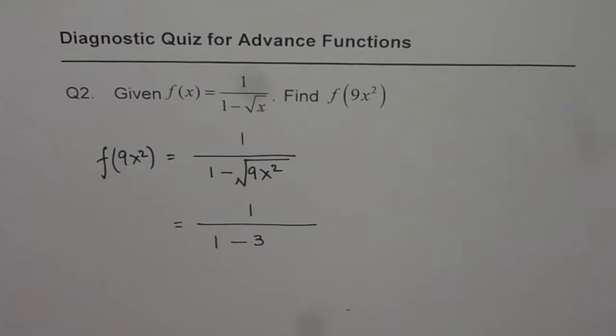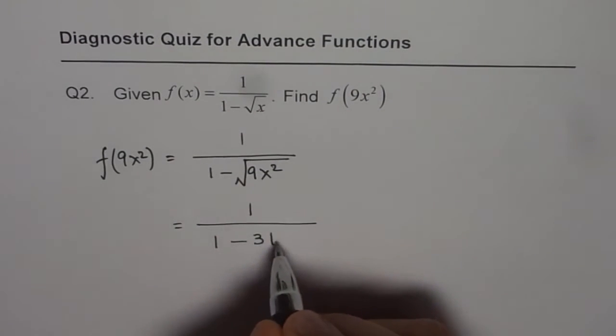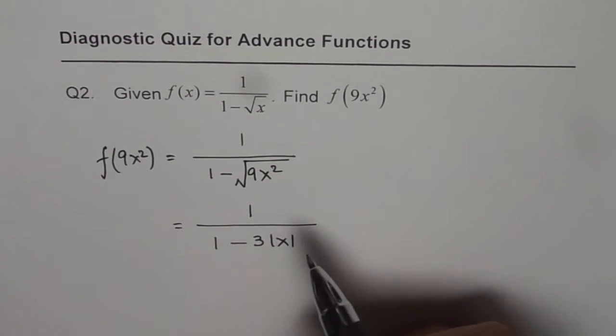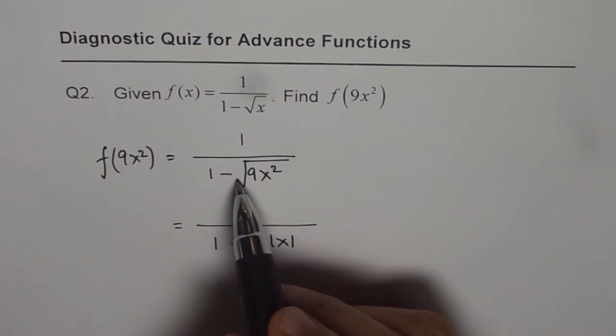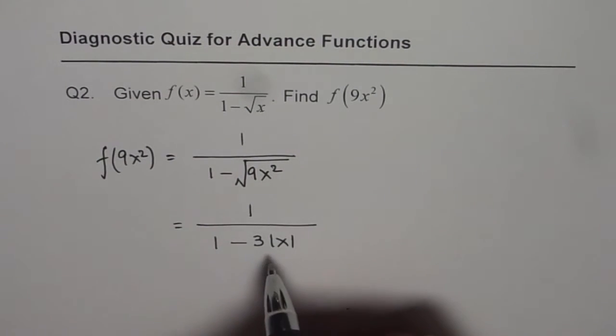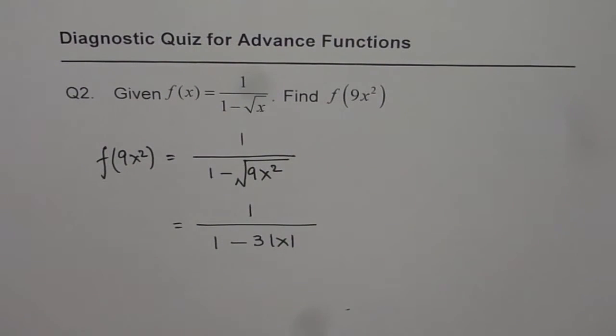Is it x? It is not x. It is absolute value of x. Since x squared, this quantity is always positive, so it is absolute value of x, not x. That is a very important thing for which I have taken this question here.